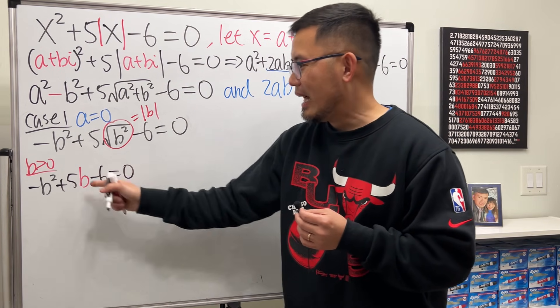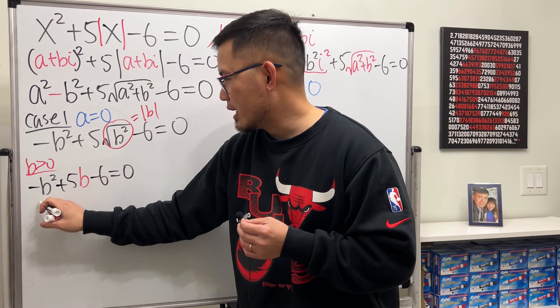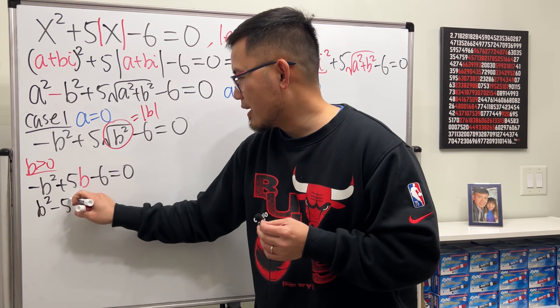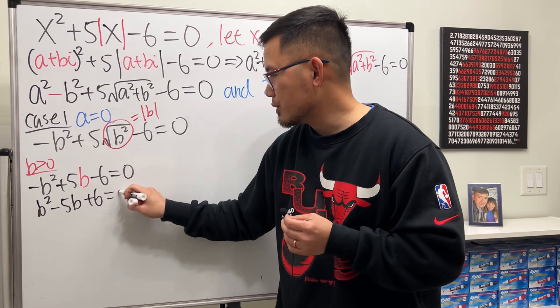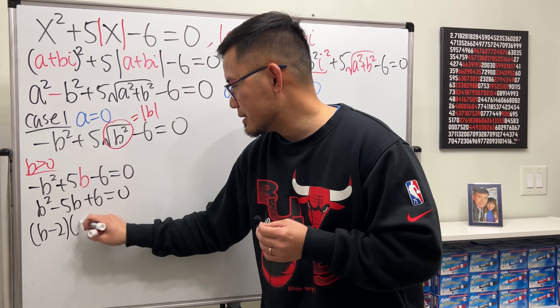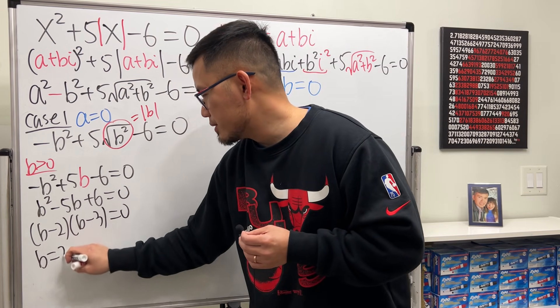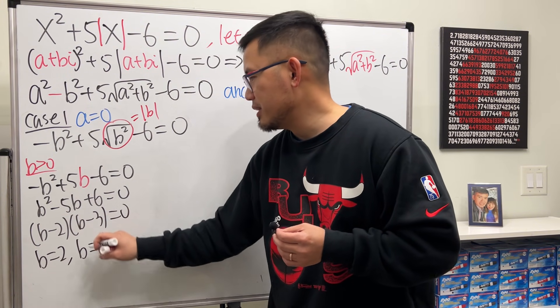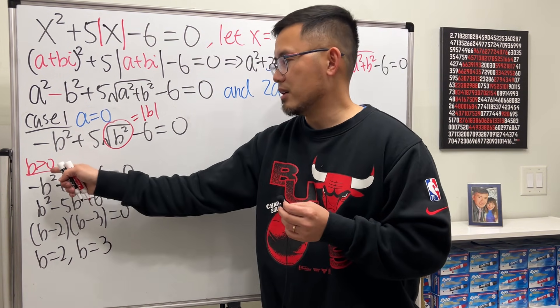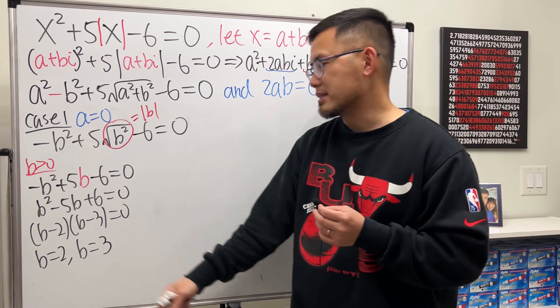Now solve this regularly. I will divide everybody by negative first, though. So we get b squared minus 5b plus 6 is equal to 0. Factor it, b minus 2 times b minus 3. This means b equals 2, b equals 3. Both work, because b is greater than 0. They are both positive. Now,